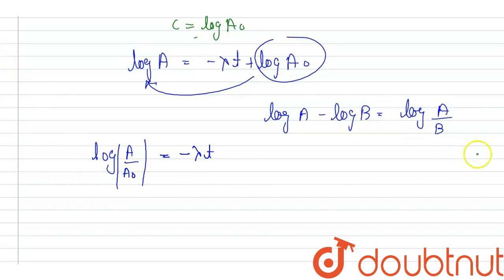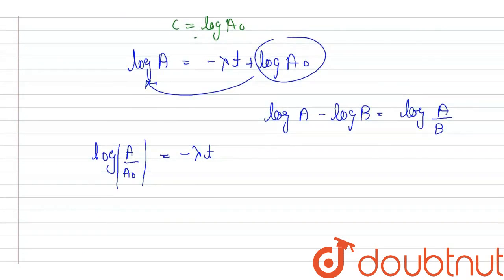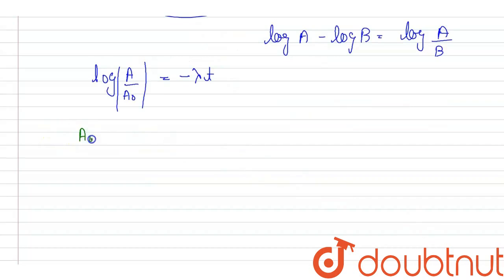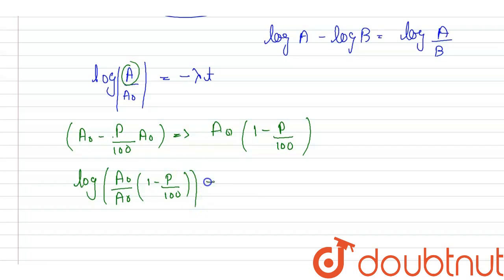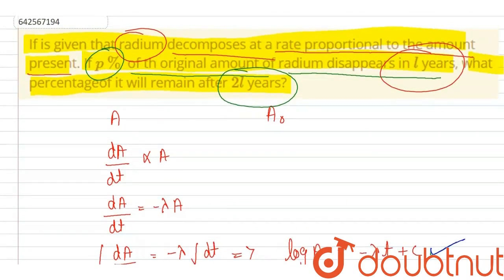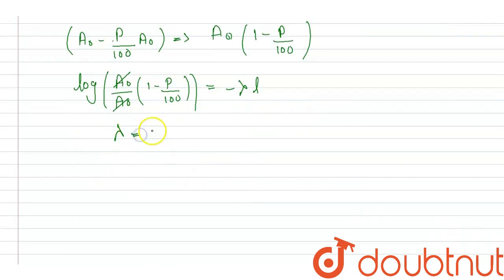Now, if P percent of the original amount of radium depletes in L years, we need to find how much amount will be left in 2L years. For P percent depletion, the remaining amount is A0 minus (P/100)A0, which equals A0 times (1 minus P upon 100). Substituting into the equation, log of A0 upon A0(1 minus P/100) equals minus lambda L. From this, lambda equals minus (1/L) log(1 minus P upon 100).